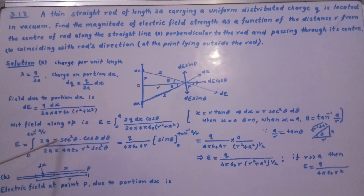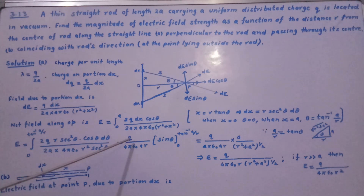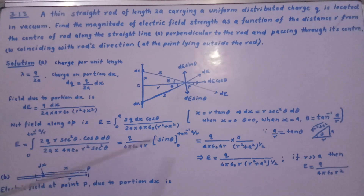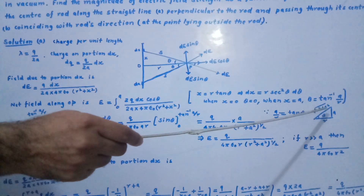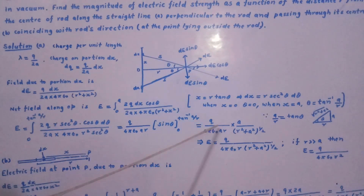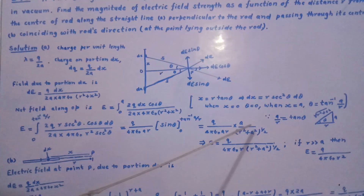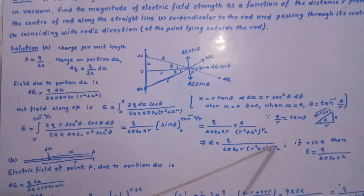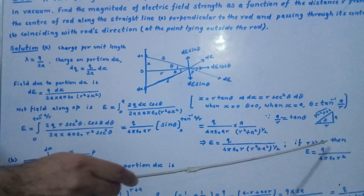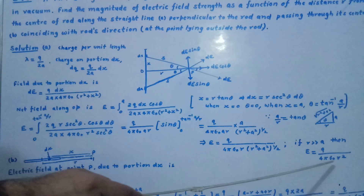The r's and sec²θ terms cancel, as do the factors of 2, leaving E = (Q / 4πεr) · ∫cosθ dθ = (Q / 4πεr) · sinθ. Evaluating from 0 to tan⁻¹(a/r) and substituting sinθ = a/√(r² + a²), we get E = Qa / (4πεr · √(r² + a²)), which simplifies to E = Q / (4πεr√(r² + a²)). If r >> a, then E ≈ Q / (4πεr²).